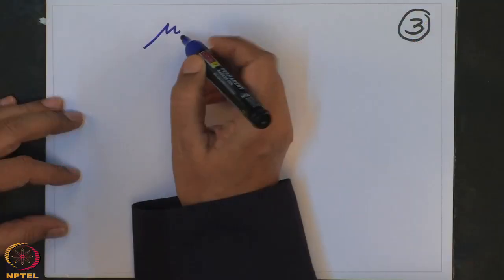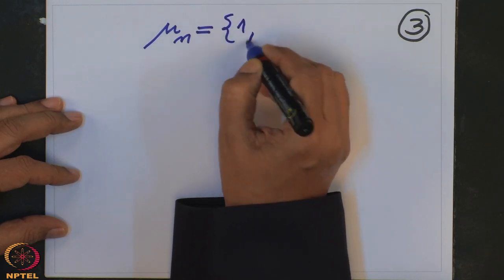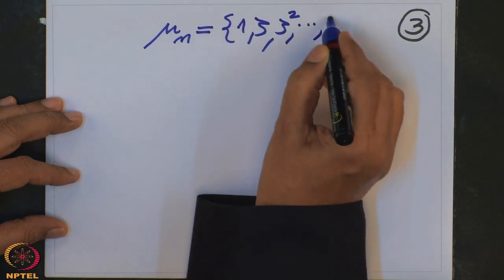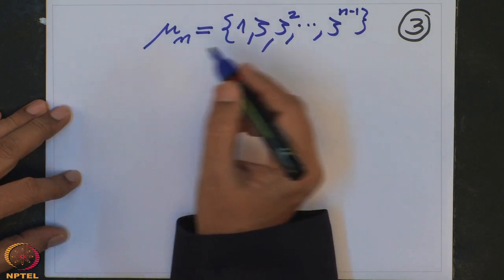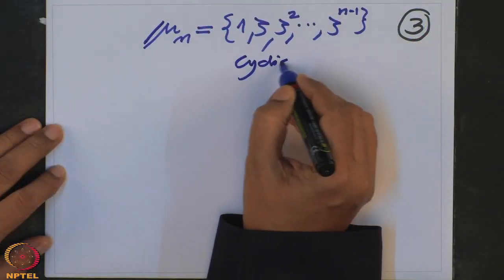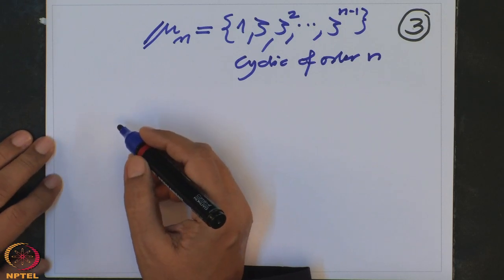One problem is to find the minimal polynomial exactly, which would give the degree and hence the order of the Galois group, but that alone will still not prove it is Abelian. What information can we extract from the group μₙ? This group μₙ is cyclic of order n generated by ζ: {1, ζ, ζ², …, ζ^(n−1)}. We know what are the automorphisms of this group.